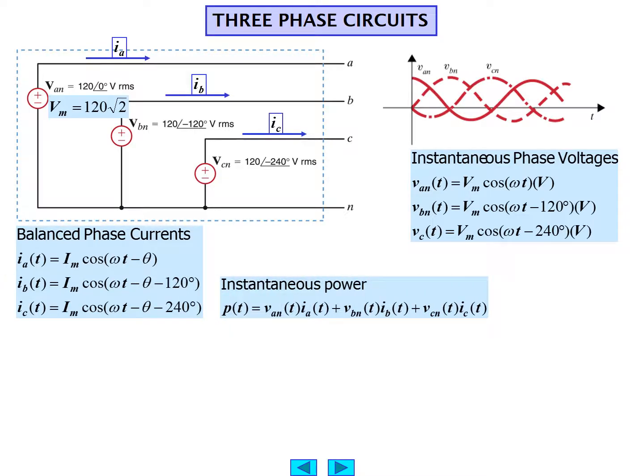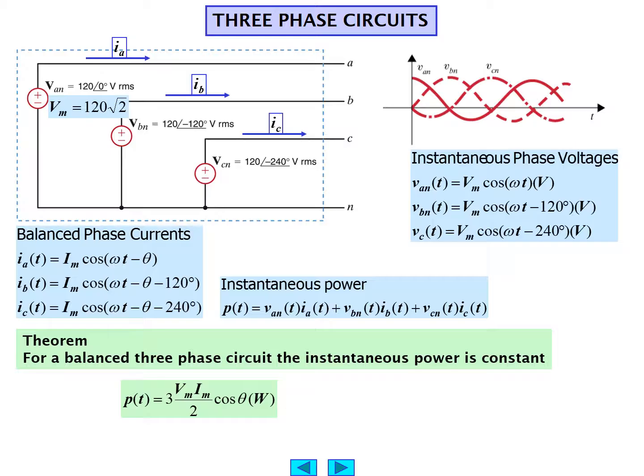The instantaneous power calculation, as we've seen before, is the product of voltage and current. P(t) is equal to each of the voltages: V_AN times I_A plus V_BN times I_B plus V_CN times I_C. For a theorem, for a balanced three-phase circuit, the instantaneous power would be constant. P(t) would be 3 V_m I_m divided by 2 cosine theta, and the units are, of course, watts.